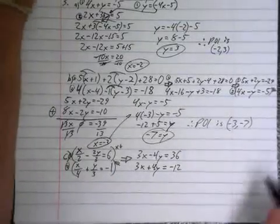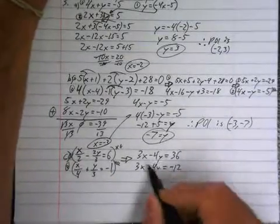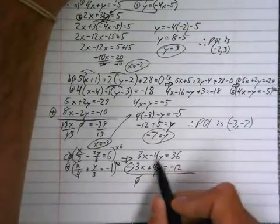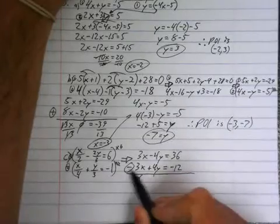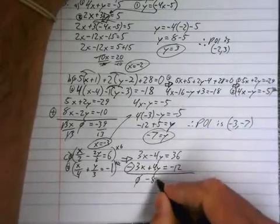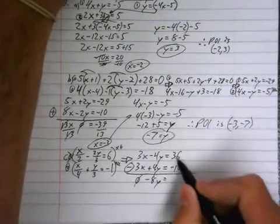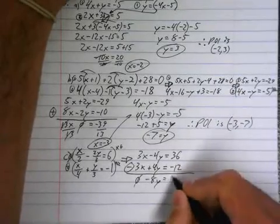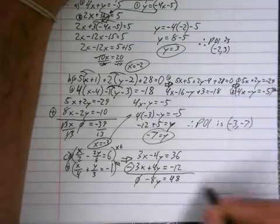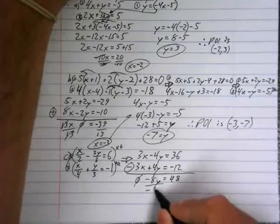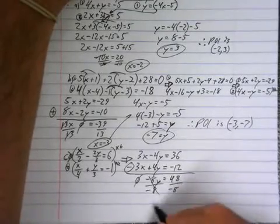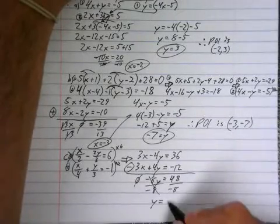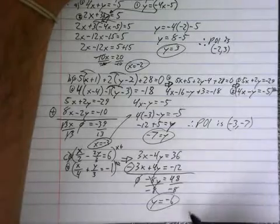This is actually going to be pretty easy. So, this one, I can eliminate the 3s by subtracting. If I subtract down, that goes away. Now, watch this, though. These do not go to 0. Negative 4 minus another 4 is actually negative 8y. And 36 minus minus 12 is 36 plus 12 is 48. And that divides off. And y is equal to negative 6. Okay.